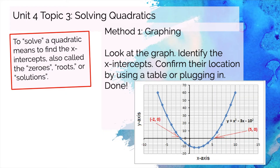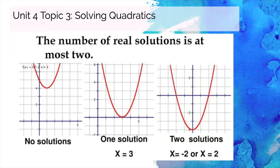To solve a quadratic by graphing, you simply look at the graph and see where the x-intercepts are. If it's unclear or they might be decimals, you can use a table function in a calculator, create a table of values yourself, or plug in 0 for y. The most solutions a quadratic can have is 2. Some quadratics hover over or below the x-axis and have no solutions. Sometimes with a perfect square trinomial you get one solution, and sometimes you get two, like x equals 2 and x equals negative 2.